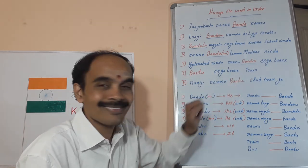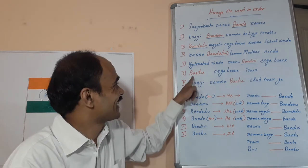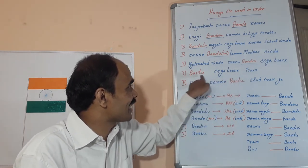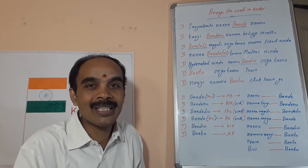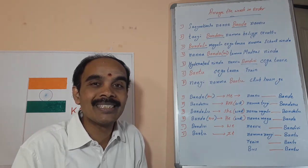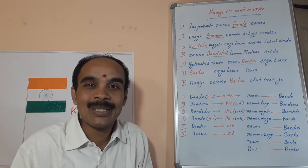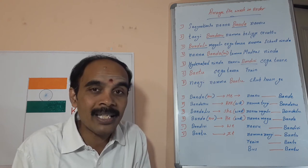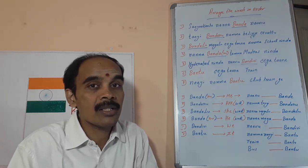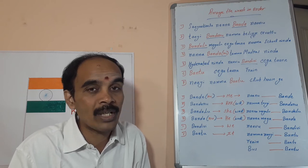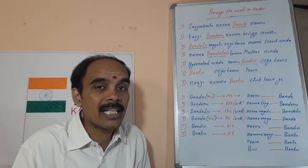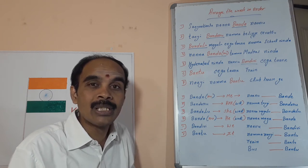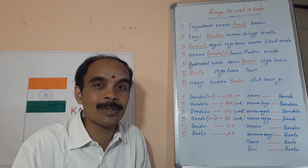The next one is: 'bantu eegathane train' — very easy. Have you got the answer? The answer is: 'train eegathane bantu,' meaning 'train came just now.' We can say 'Shatabdi Express eegathane bantu' or 'Prasanthi Express eegathane bantu.' 'Bantu' means 'it came.' We can apply this for all animals and things — car, scooter, train, flight, all vehicles and animals.